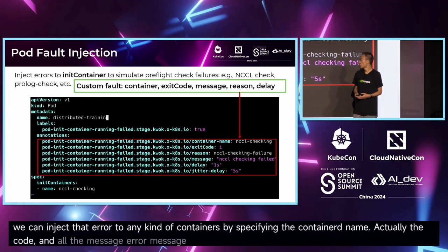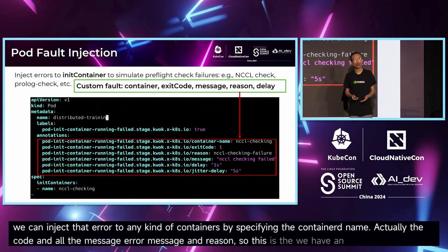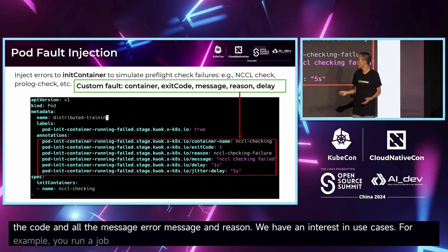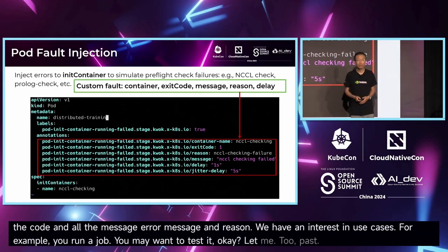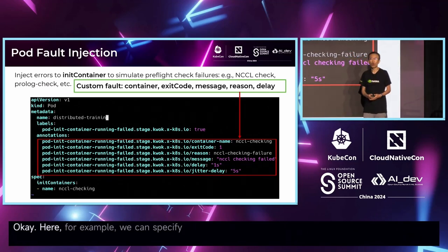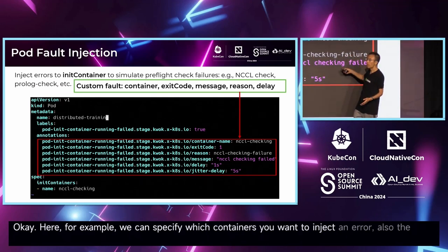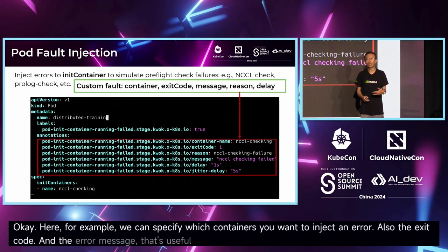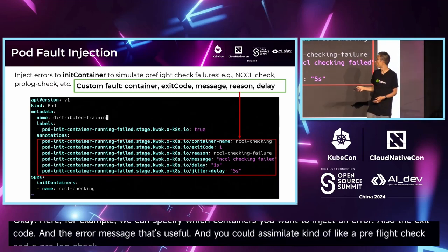At the pod level, we can inject errors into any container by specifying the container name, exit code, and error message. This is useful — for example, when running a job you may want to test a pre-flight check. You can specify which container you want to inject an error into, along with the exit code and error message, to simulate a pre-flight check error.